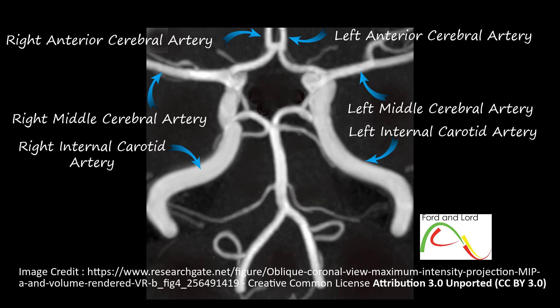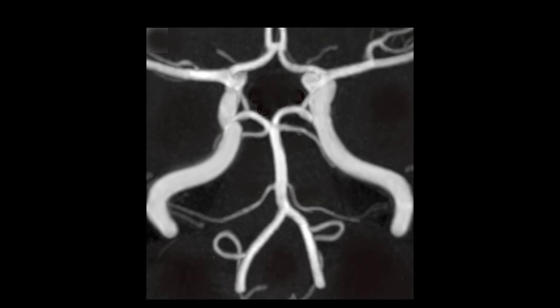The circle of Willis surrounds the optic chiasm and pituitary stalk. It is easy to see how the circle of Willis connects the anterior and posterior circulations of the brain. It is very important to note that the circle of Willis shows significant anatomical variations. It is believed to provide an alternative route for blood flow in the event of an obstruction, providing a compensatory mechanism to ensure vital blood supply to the most oxygen-hungry organ in the body — the brain.